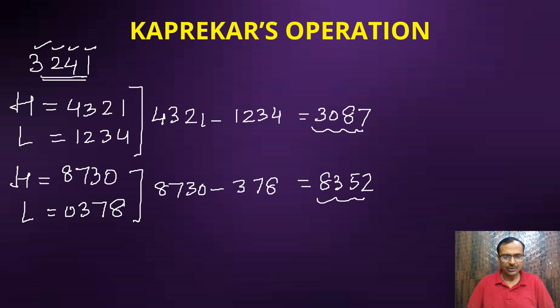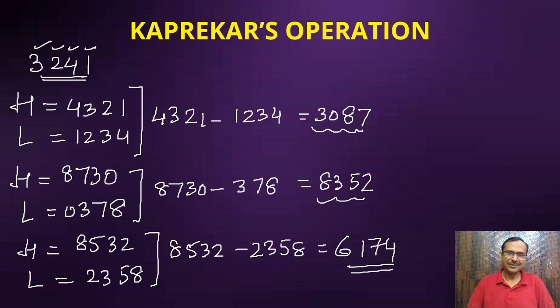You have the highest as 8532 and the lowest as 2358. Now if you take the difference 8532 and 2358, the difference is going to be 6174 - the same number which is known as the kernel of the operation. This is Kaprekar's operation. So how many steps did it take us to get to 6174? Only three steps.